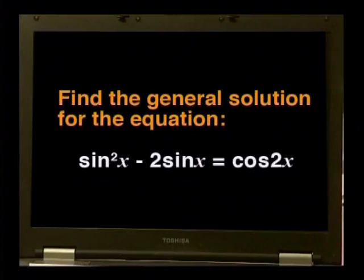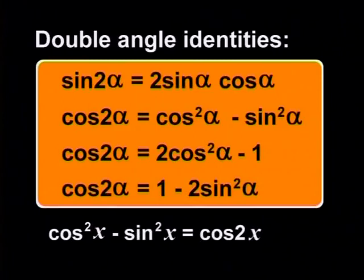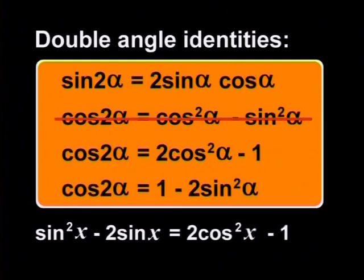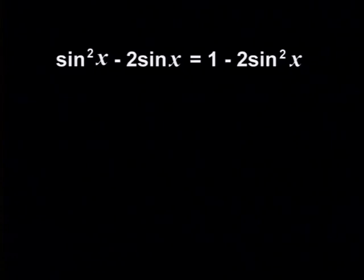How do we decide which one to use? I'm going to give you an equation to solve and I want you to decide which of the three will make your working simpler. Find the general solution for the equation sine squared x minus two sine x equals cosine two x. If we use the first form of the identity we get cosine squared and sine squared on the right hand side. The second version gives cosine squared on the right. The last version gives sine squared on the right. Well, the third looks most promising because there are only sine and sine squared on both sides.